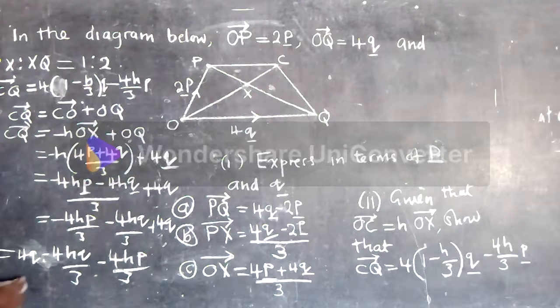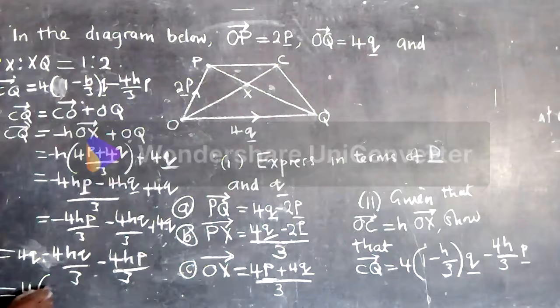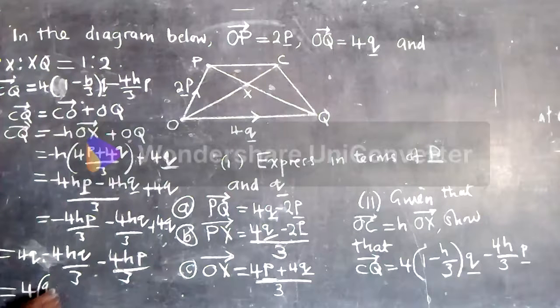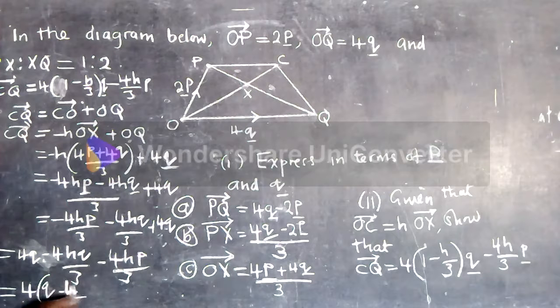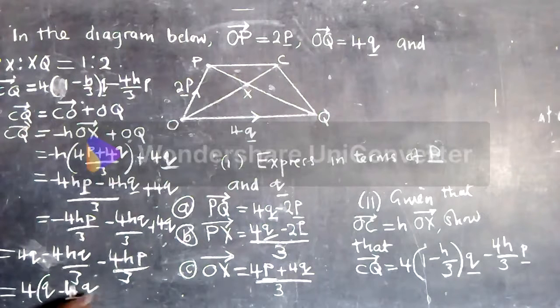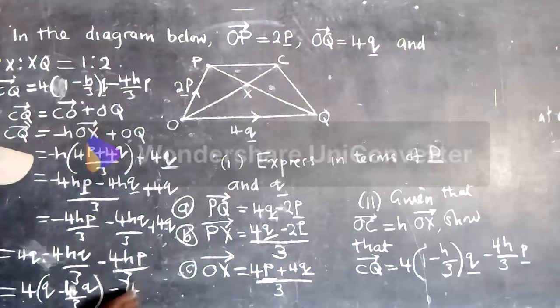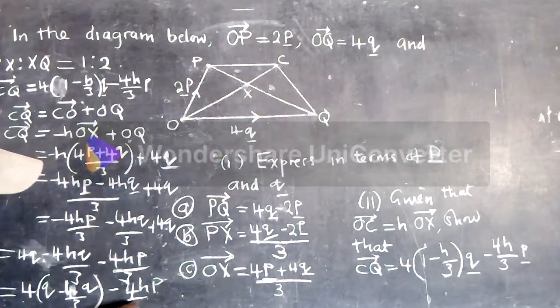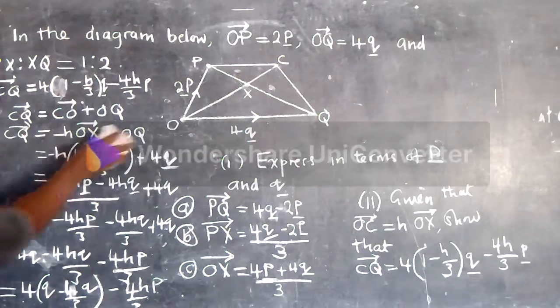Now we need to clean up the right part. We can factor out 4 with Q minus H over 3 minus what is here.